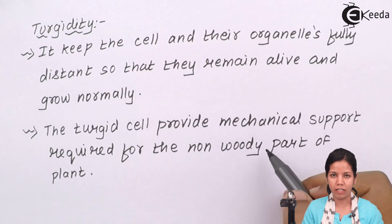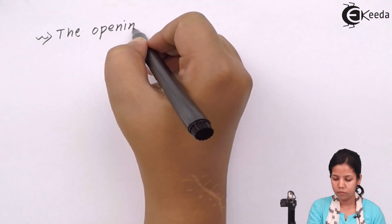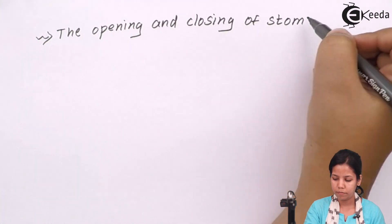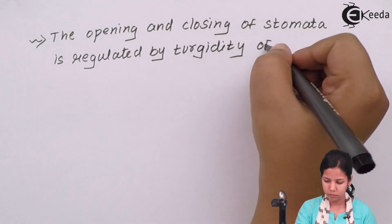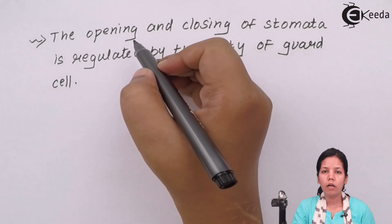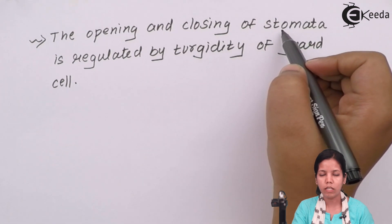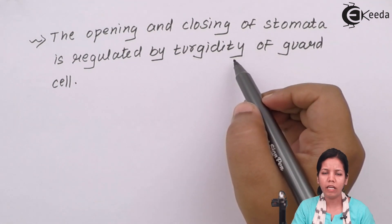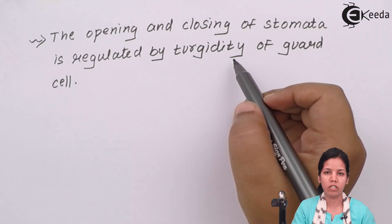When I say non-woody part, it means the petiole of the leaf, the leaf itself, or the fruit. It provides them support so that they can stand still at a place. The most important function of turgidity is the opening and closing of stomata — the small pores on the leaf surface which help in transpiration, that is, loss of water. Turgidity helps the guard cells to open, allowing transpiration to take place, whether it is stomatal, cuticular, or lenticular. Stomatal transpiration is widely aided by the process of turgidity or turgor pressure.